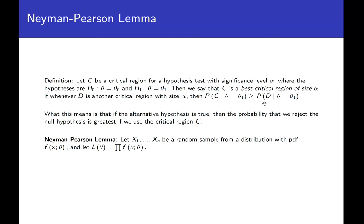Our goal in these problems is finding these best critical regions. We're going to use the Neyman-Pearson lemma. We start with a random sample, denote the PDF and likelihood function as always — the likelihood function is the product of the PDFs evaluated at each X sub i, just like we've always defined it.